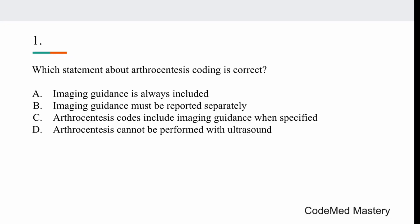The correct answer is option C — arthrocentesis codes include imaging guidance when specified. Option A is wrong because only the ultrasound-inclusive codes include imaging. Option B is wrong because it is not always the case; only when using codes 20600, 20605, and 20610 is imaging guidance reported separately. Option D is wrong because arthrocentesis can be performed with ultrasound, and CPT has created specific codes for it.